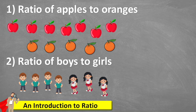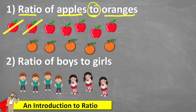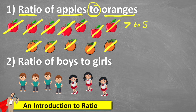Let's have a look at this first example together, and this says the ratio of apples to oranges. Now the order that a ratio question is given to you is very important, because we're looking at the ratio of apples to oranges. We're going to simply count our apples: 1, 2, 3, 4, 5, 6, 7. So we have 7 apples to how many oranges? 1, 2, 3, 4, 5. So we have 7 to 5.